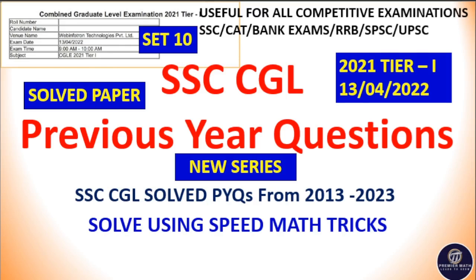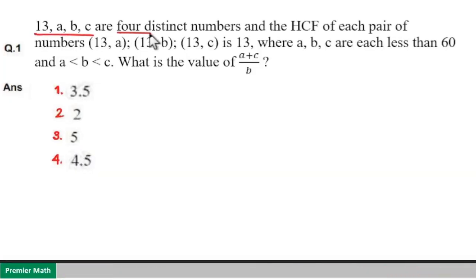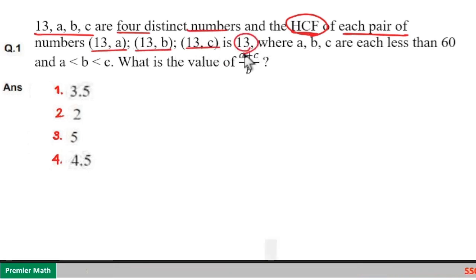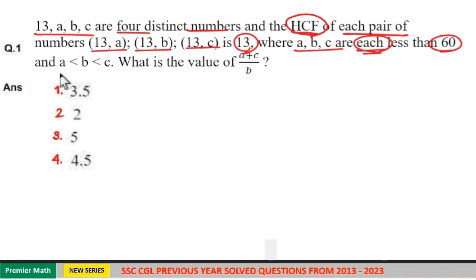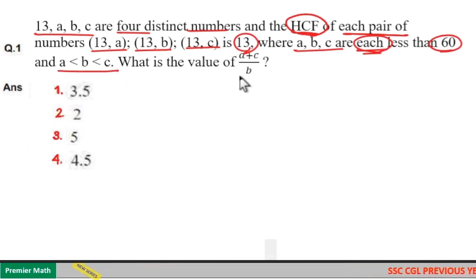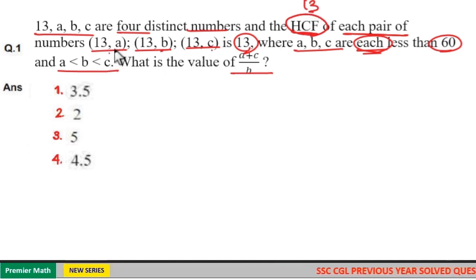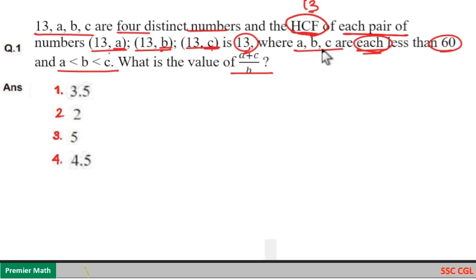Our first question: A, B, C are 4 distinct numbers and HCF of each pair of numbers 13A, 13B, 13C is 13, where A, B, C are each less than 60. A less than B less than C — what is the value of A plus C by B? Here HCF is 13 means all these numbers are multiples of 13. That is A is multiple of 13, B is multiple of 13 and C is multiple of 13.